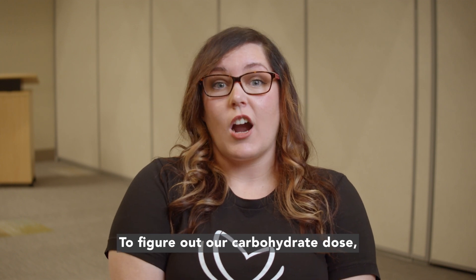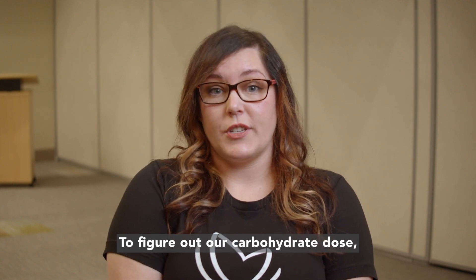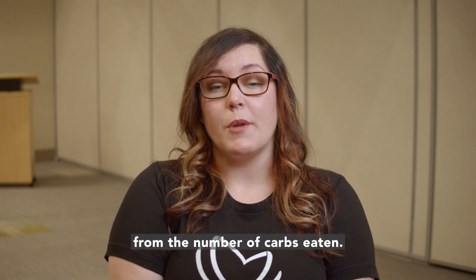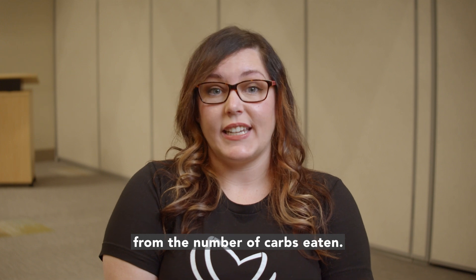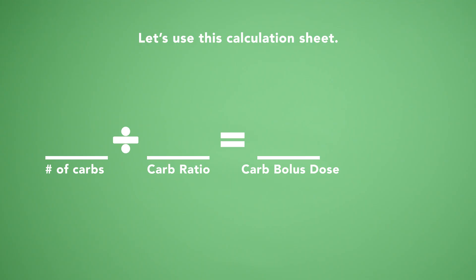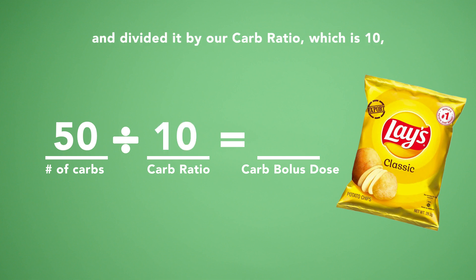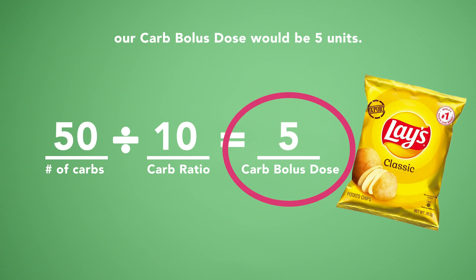To figure out our carbohydrate dose, we need to divide our carb ratio from the number of carbs eaten. Let's use this calculation sheet. If you ate a bag of chips with 50 grams of carbs and divided it by our carb ratio, which is 10, our carb bolus dose would be 5 units.